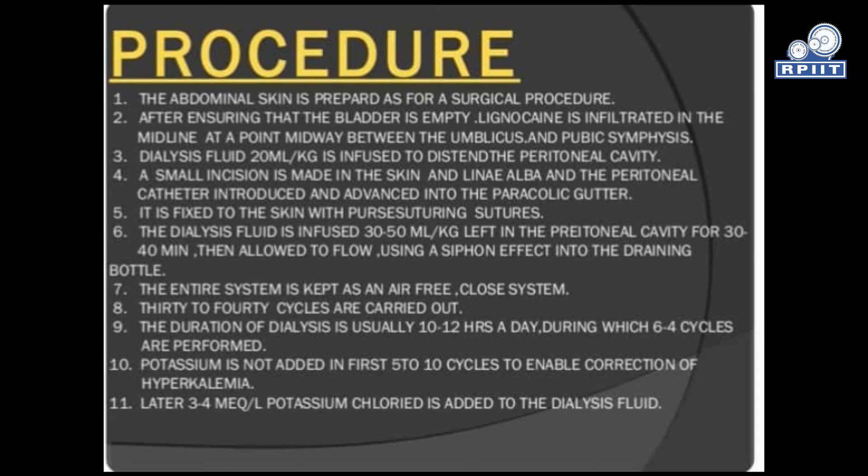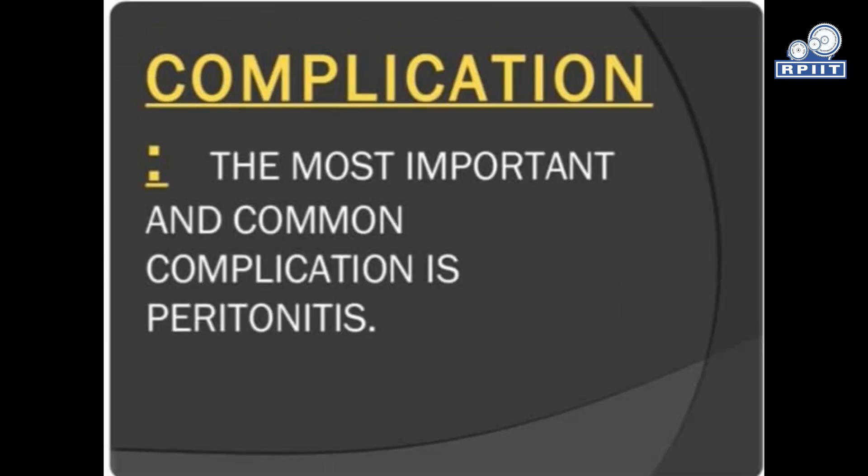Potassium is not added in the first 5–10 cycles to enable correction of hyperkalemia. Later, 3–4 mEq per litre of potassium is added to the dialysis fluid.